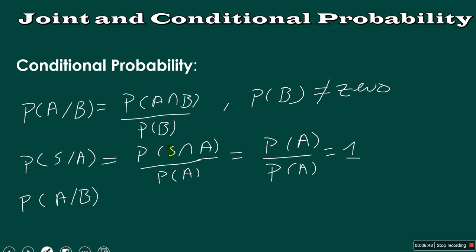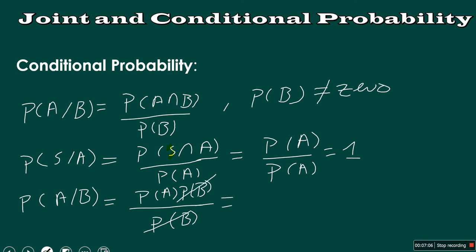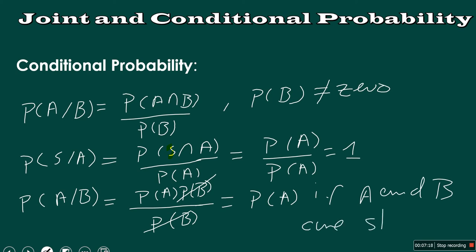Probability of A given B could equal probability of A multiplied by probability of B, divided by probability of B. It will equal probability of A if A and B are statistically independent. If they are statistically independent, then probability of A intersect B will equal probability of A multiplied by probability of B.